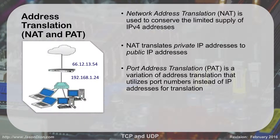Network Address Translation (NAT) and Port Address Translation (PAT) — NAT is used to conserve our limited supply of IPv4 addresses. It takes our private address and converts it into a public address. For example, a private address of 192.168.1.24 might use the public address of 66.12.13.54 given by the cable provider. The computer goes to the router, which transfers the information using the public address out to the internet. With NAT, you need a one-to-one mapping of IP addresses.